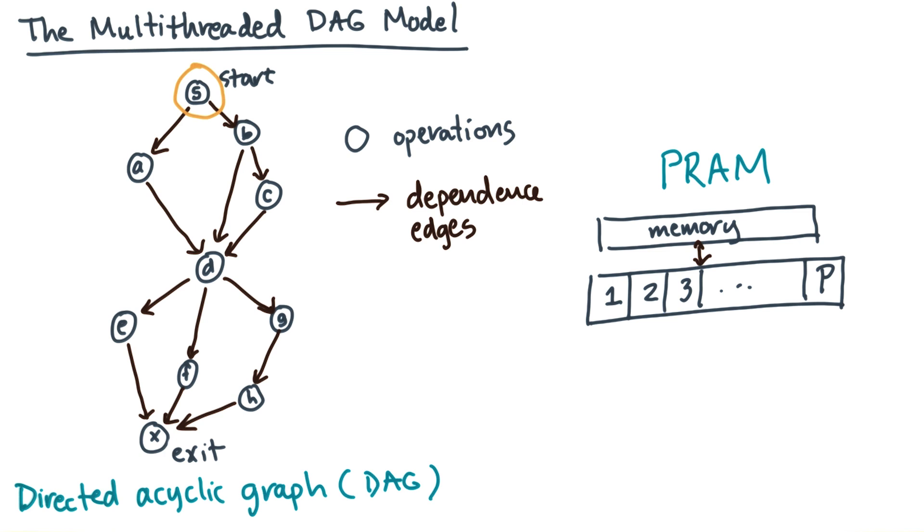Since it's ready to go, meaning it has no dependences, we can assign it to any processor that's free and go ahead and start executing. So here, I've assigned the starting vertex S to processor 3, and processor 3 will start executing it.